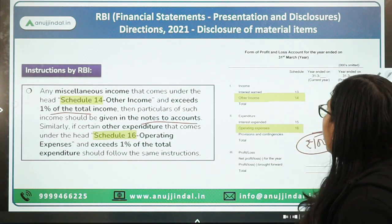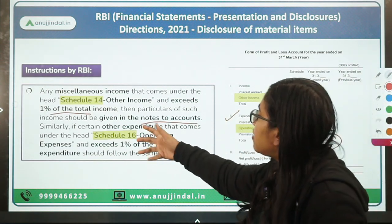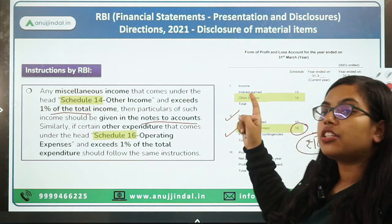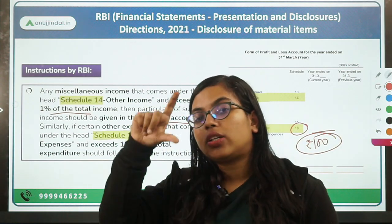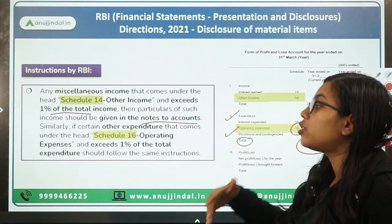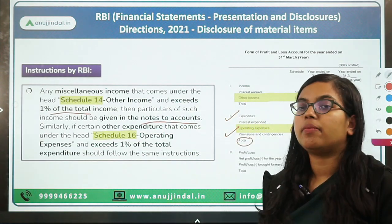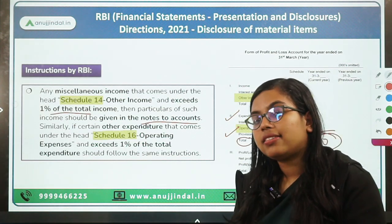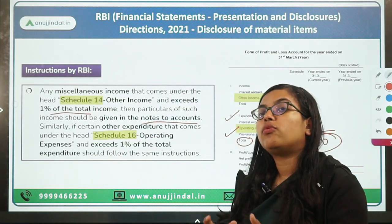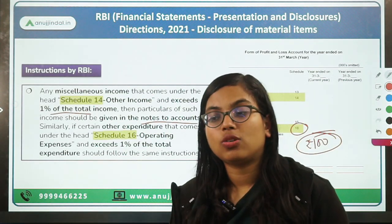Similarly, if certain expenditure coming under operating expenses under Schedule 16 exceeds 1% of the total expenditure, then such expenditure should also be disclosed in the notes to account. Any miscellaneous income or expenditure that exceeds 1% of the total will be considered material information and should be disclosed in the notes to account.